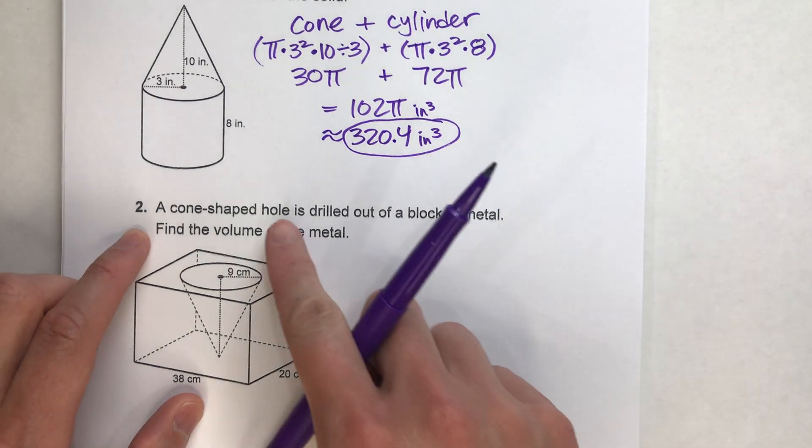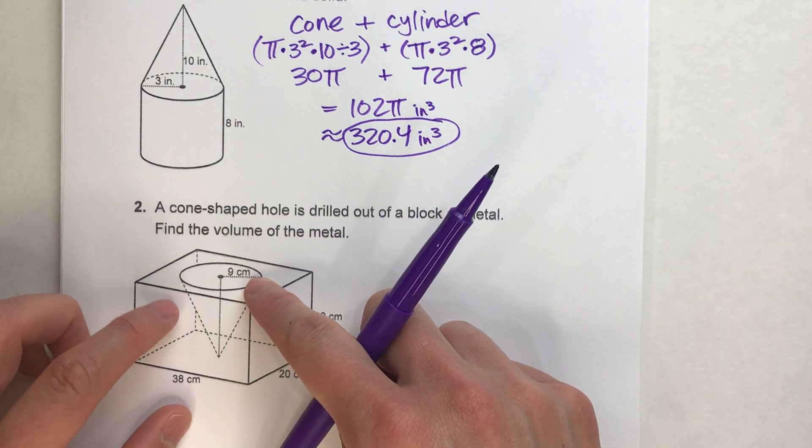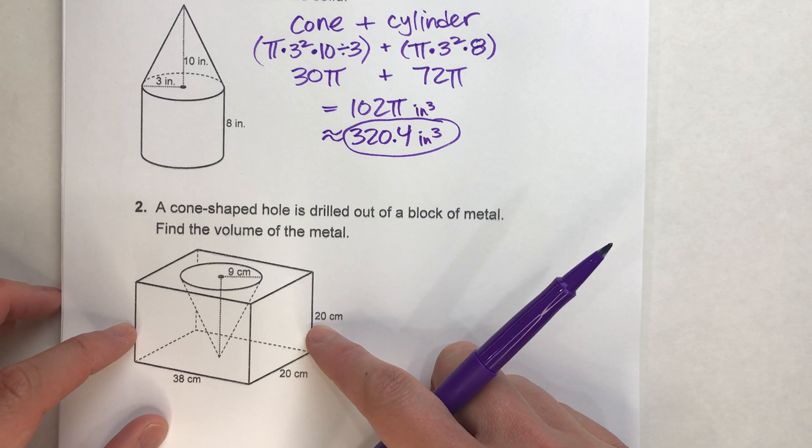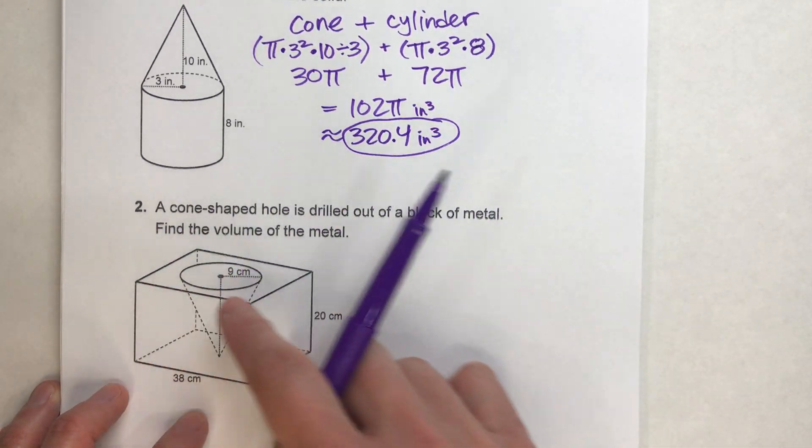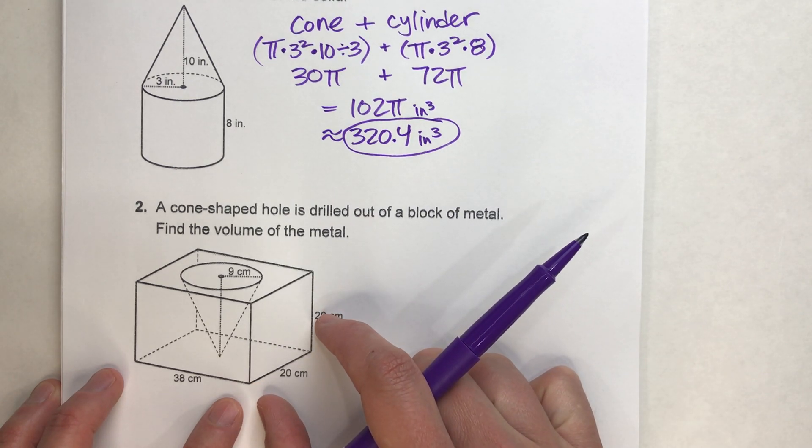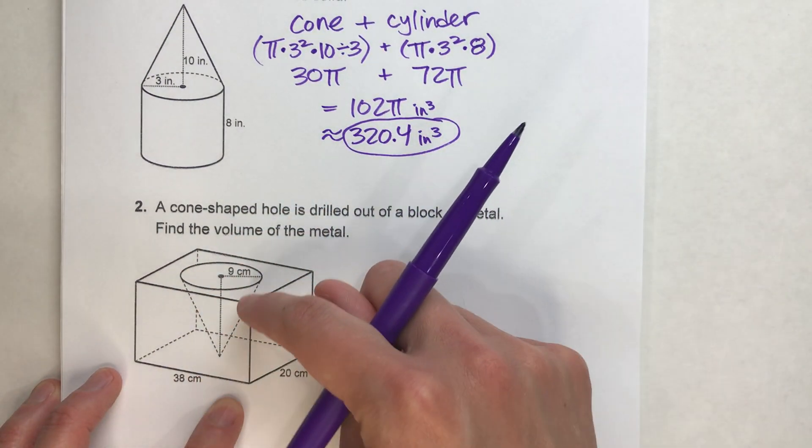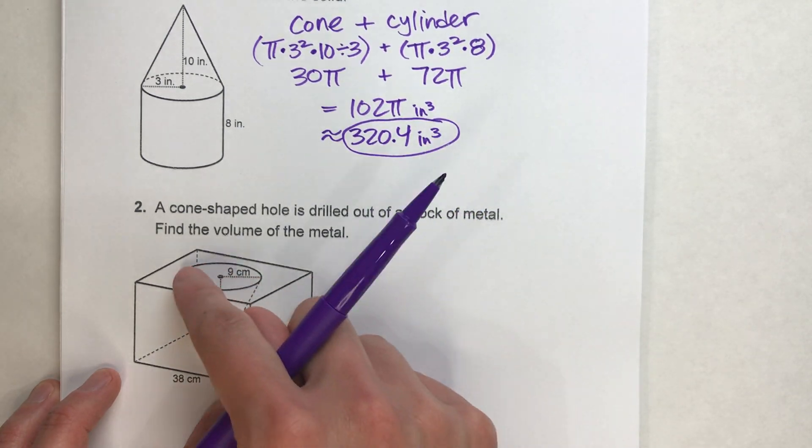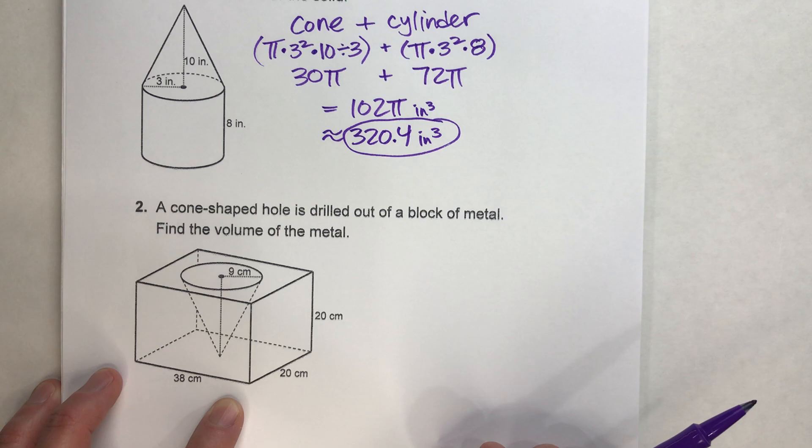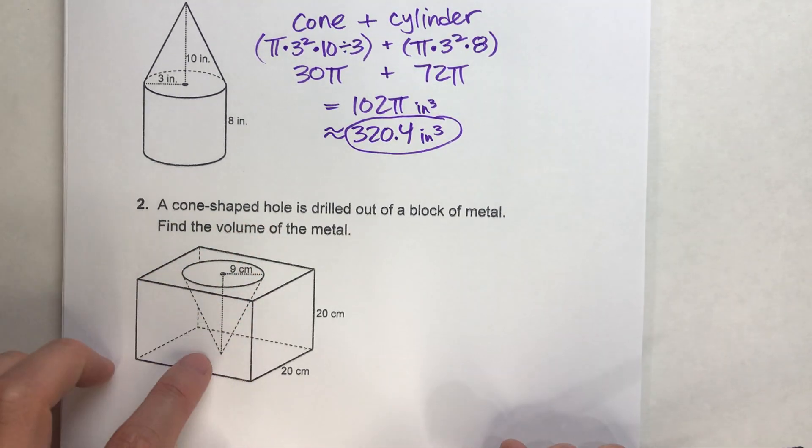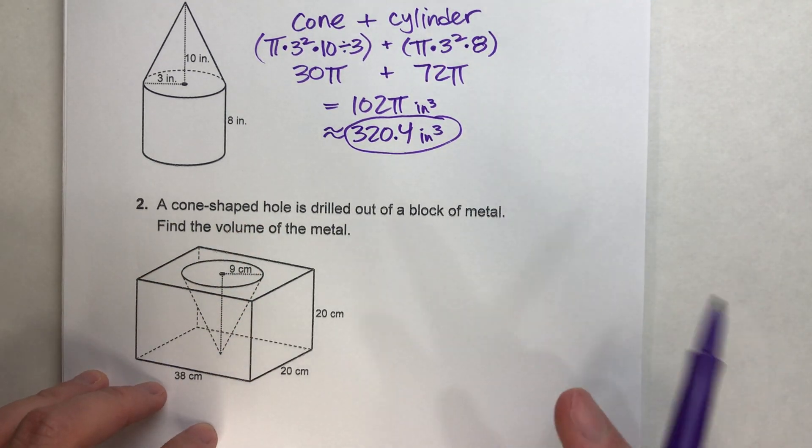So we have a cone-shaped hole drilled out of this metal block. So you kind of have to picture like almost like a rectangular block here, and then a cone-shaped hole is being drilled out of it. So that's missing, all that stuff inside the cone, that's missing from our metal block. And we want to find the volume of that metal block.